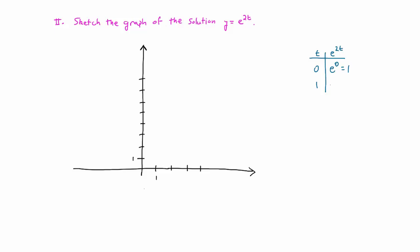And when t equals 1, e to the 2t is just e squared, which is approximately 2.72 squared, and that's approximately 7.4.